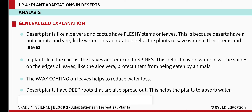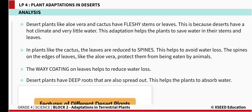In plants like cactus, the leaves are reduced to spines. This helps to avoid water loss and also helps to protect the leaves from being eaten by animals. The waxy coating that is present on the leaf helps to reduce the water loss. Desert plants have deep roots that are spread out, which helps the plant to absorb water.